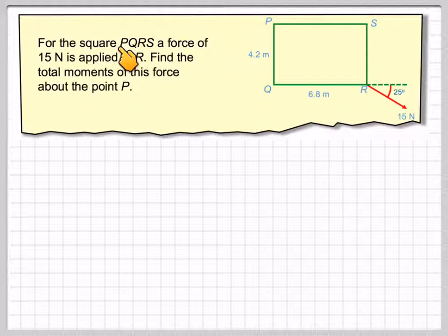For a square PQRS, a force of 15 newtons is applied at the point R. Find the total moment of this force around the point P. So this force is actually applied at 25 degrees to this line here, so we need to be careful on that.